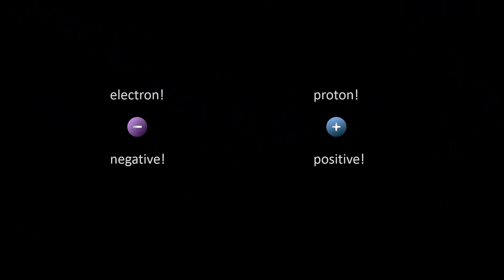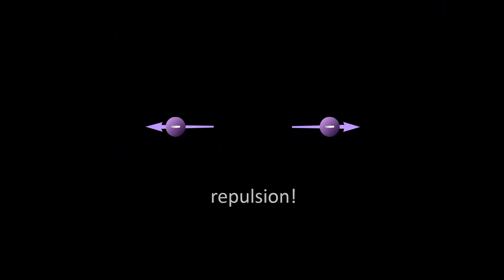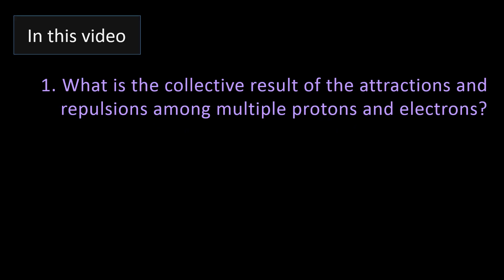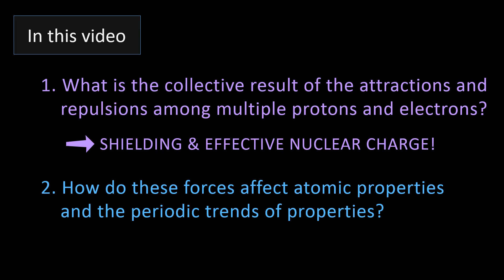There are two forces in the atom that result in the chemistry we experience. One is the negative electron and positive proton exerting an attractive force on each other. The other is the repulsive force exerted by electrons. With the exception of hydrogen, all atoms have more than one each of electrons and protons. In this video, we will look at the collective result of attractions and repulsions among multiple protons and electrons within a single atom — referred to as shielding and effective nuclear charge — and how these forces affect atomic properties and the periodic trends of properties.